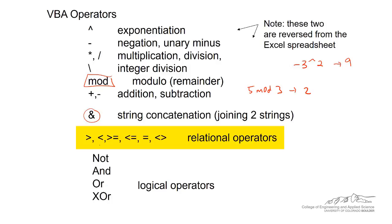Relational operators - we have greater than, less than, greater than or equal to, less than or equal to, equal, and this is not equal to, so this is the equivalent of the not equal.